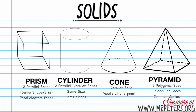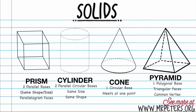And finally we have the pyramid. The pyramid can be named by its base. It has a polygonal base — this can be an octagon, a rectangle, a pentagon, a septagon, or any of those shapes. But it all meets at one point. This particular one has a square base.